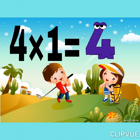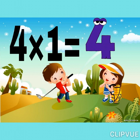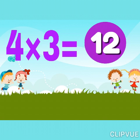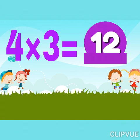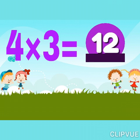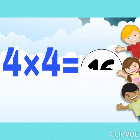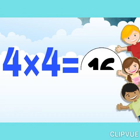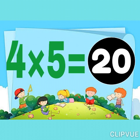Four ones are four. Four twos are eight. Four threes are twelve. Four fours are sixteen. Four fives are twenty.